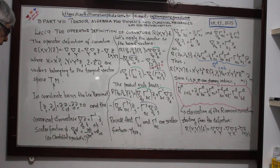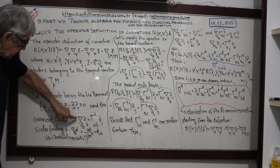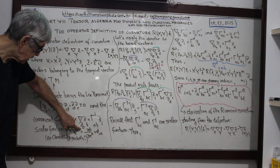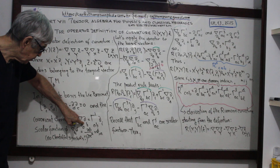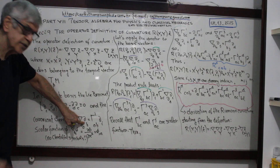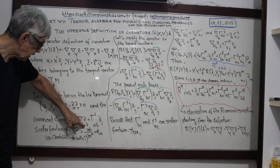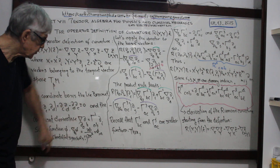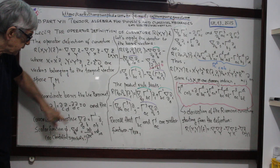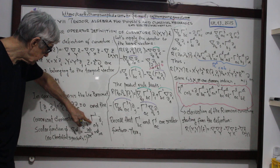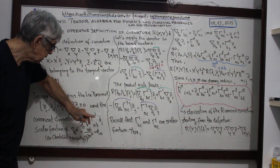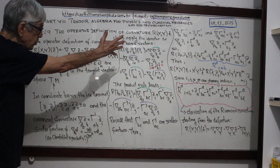Another important concept is the covariant derivative of the basis ∂/∂x^a with respect to the covariant derivative of the basis ∂/∂x^b. By definition, this is a Christoffel symbol of the second kind — gamma^i_{ab}, where i is a dummy index.